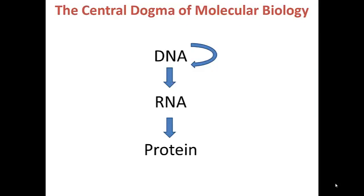First, I'd like to review the central dogma of molecular biology. The central dogma is that DNA serves as a template to make RNA, which is then used to make proteins, and this leads us to the analysis of three processes. First, replication, which we talked about in the last chapter — in replication, DNA is used as a template to make an identical copy of itself, so DNA is used to make DNA.